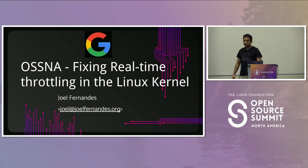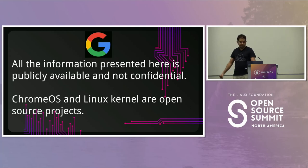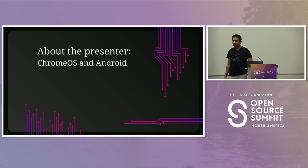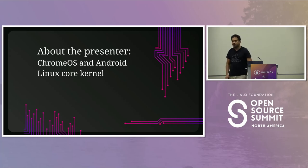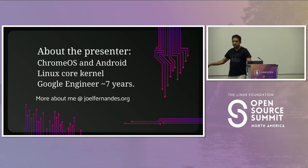This is about our use case at Google and why this matters. All the information presented here is publicly available and there's nothing confidential. Chrome OS and the Linux kernel are both open-source projects, so everything is upstream and available. A little bit about me: I work on Chrome OS currently. Previously I worked on the Android project. I also work on core Linux kernel subsystems like RCU and scheduling. I'm interested in timers, IRQs, locking — anything in the core of the kernel. I've been at Google for about seven years now.